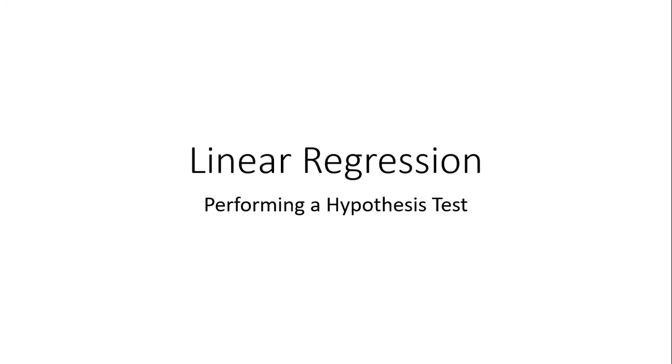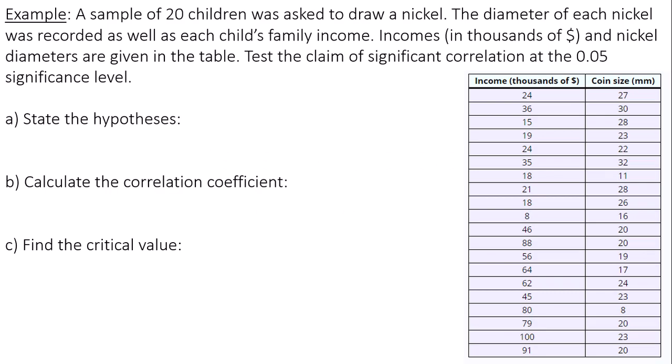Hello, this is a video about linear regression or correlation performing a hypothesis test. A sample of 20 children was asked to draw a nickel. The diameter of each nickel was recorded as well as each child's family income. Incomes in thousands of dollars and nickel diameters are given in the table. Test the claim of significant correlation at the 0.05 significance level.